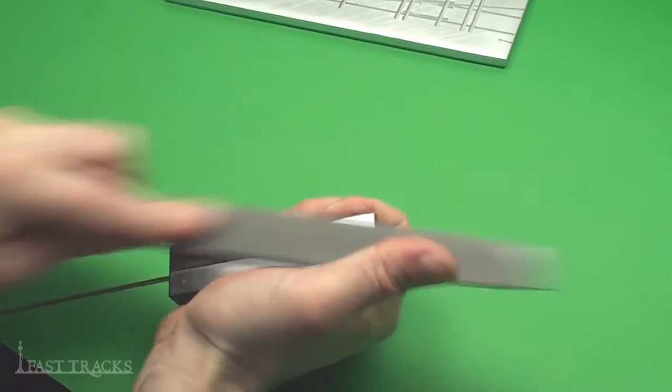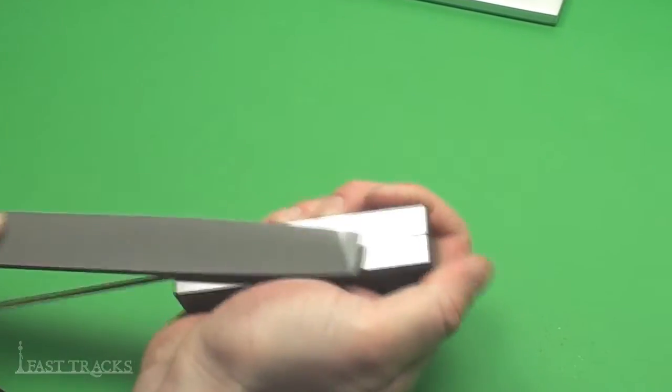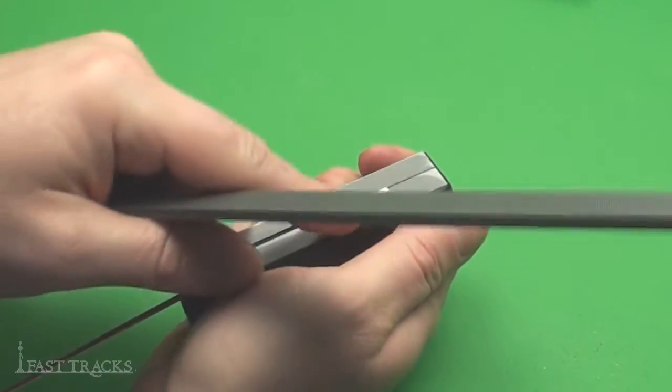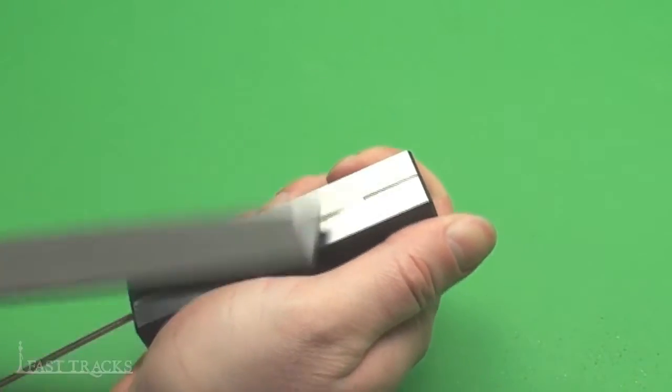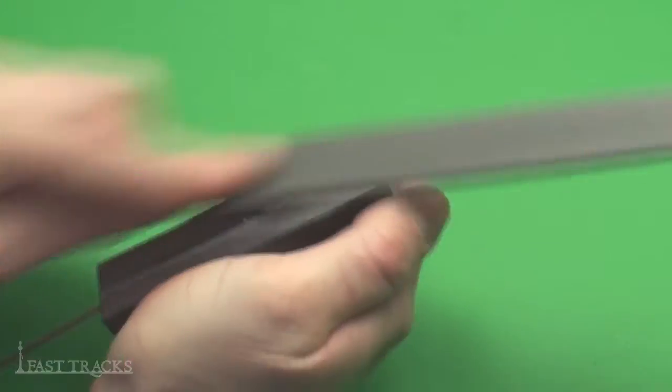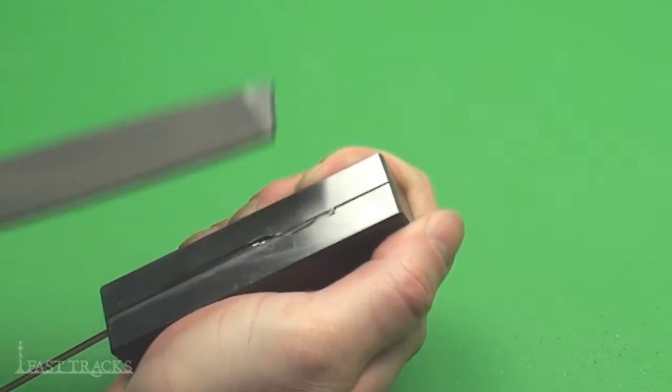It doesn't take too long, it's a few swipes. I'm filing code 83 rail here. If you're using heavier rail like code 100 or 125, it does take quite a bit longer. But with code 83, it goes fairly quick.